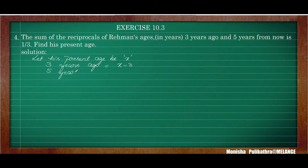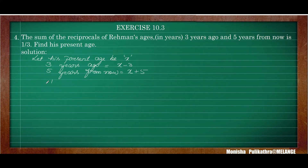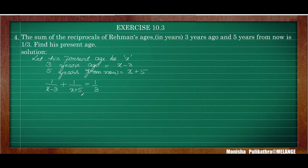Five years from now means after five years, so his age will be x plus five. They have given the sum of the reciprocals of Rahman's age three years ago and five years from now: one by x minus three plus one by x plus five is equal to one by three. So this is the information given in the question and we have to find his present age.